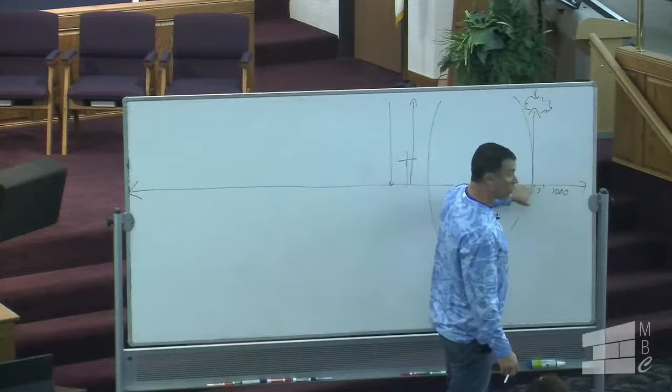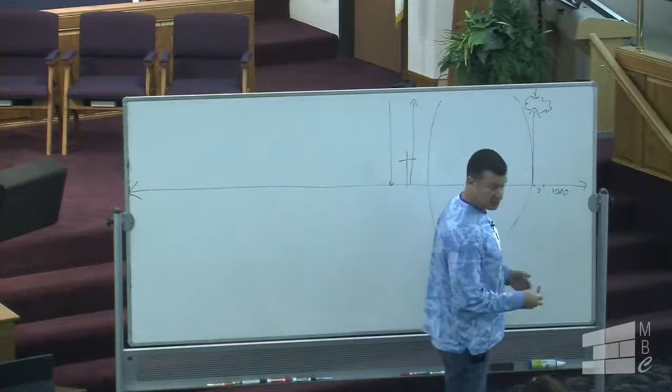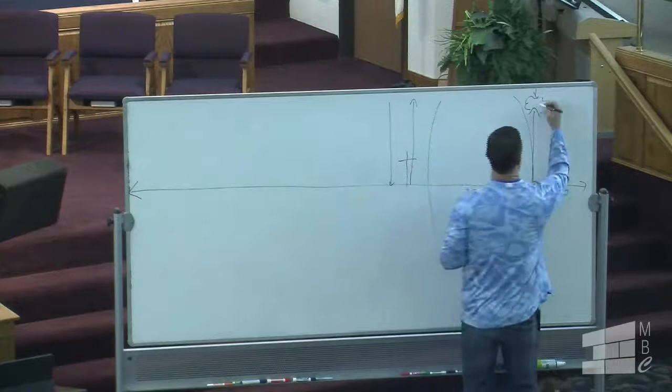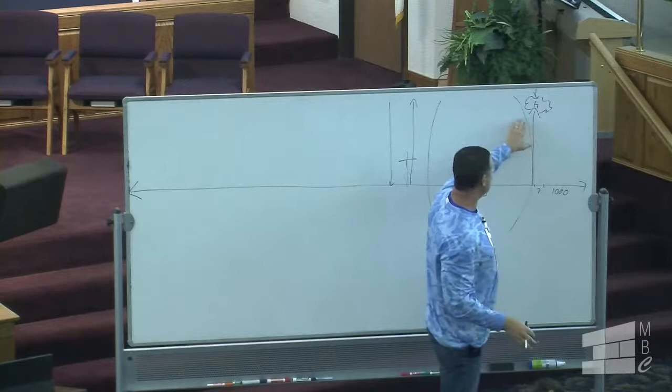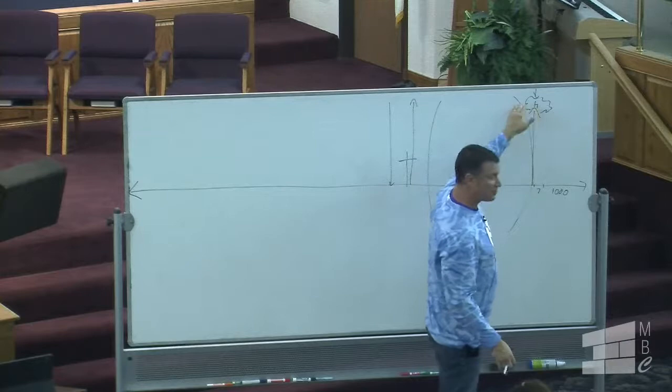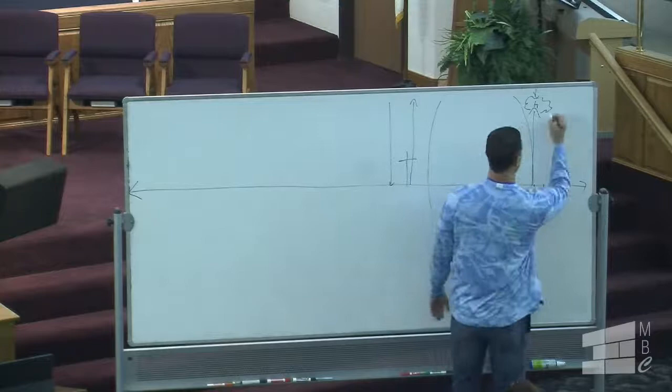I'll draw what looks like a throne here — this is what we call the judgment seat of Christ, because that's what takes place right after the rapture. We go up, we meet the Lord in the air, and that's where the judgment seat of Christ takes place. At the end of the seven years of tribulation, Christ will come down right there — and this is what we call the second coming.